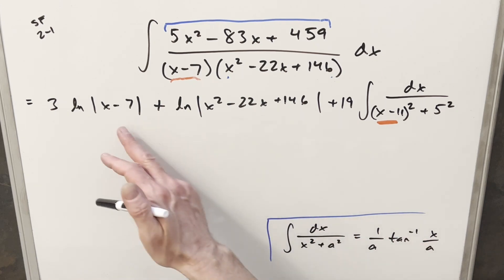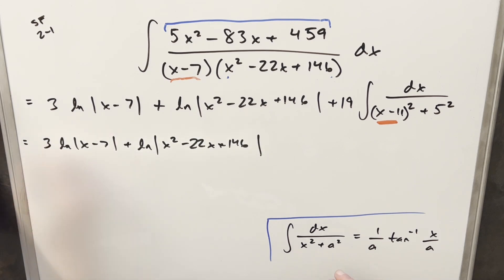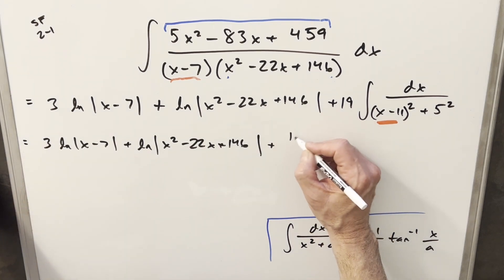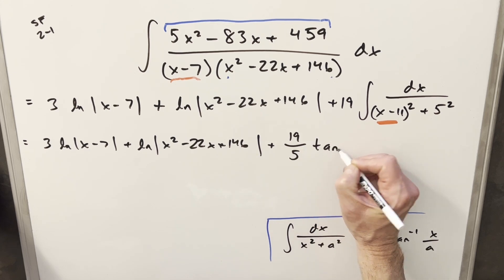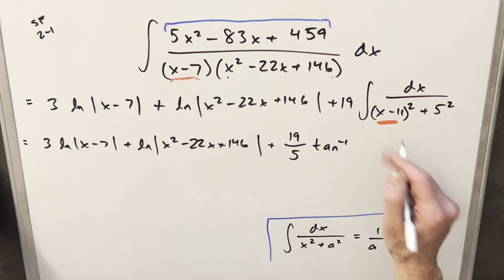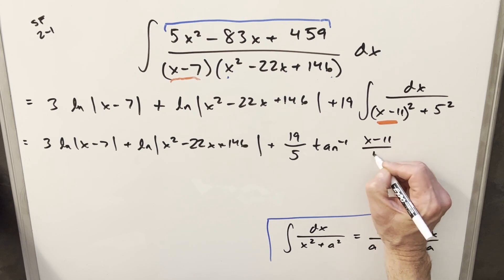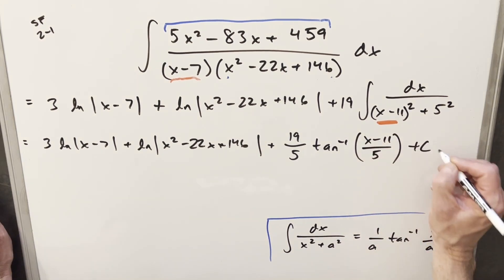So using this, we can finish this off. I just need to copy down all this other junk. Now using this formula here, we have our 19 out front. Our 1 over a is 1 over 5, so I can write this as 19 over 5 arctan. Our variable value is x minus 11 over 5. Put a plus C there, and that's it.